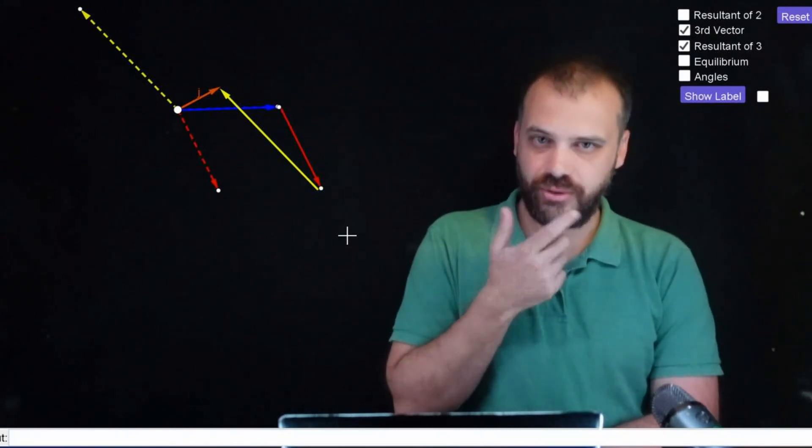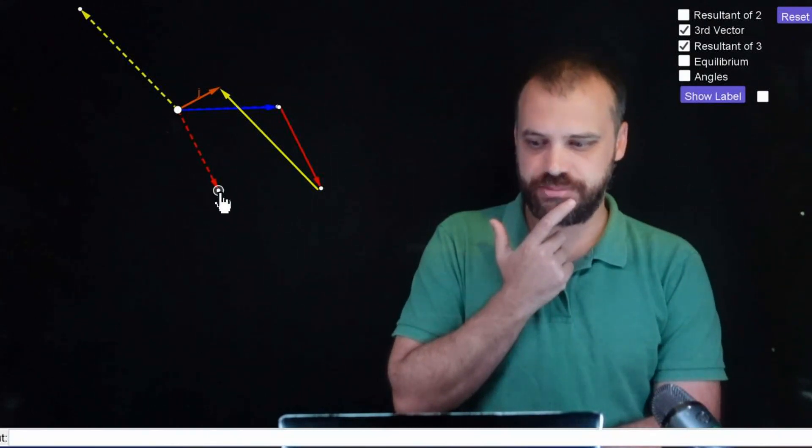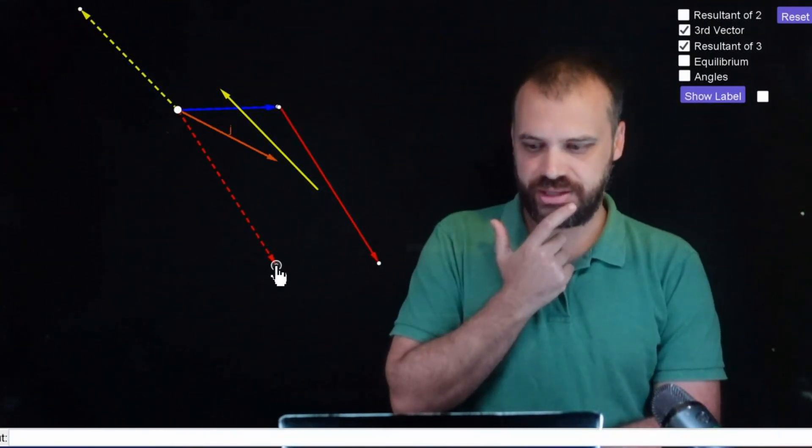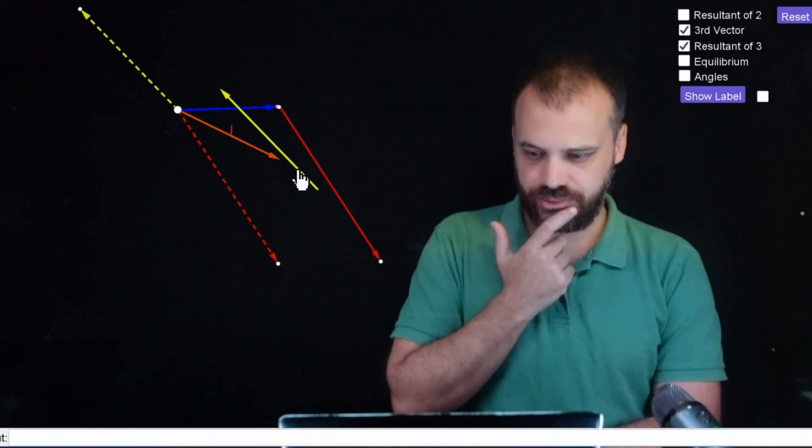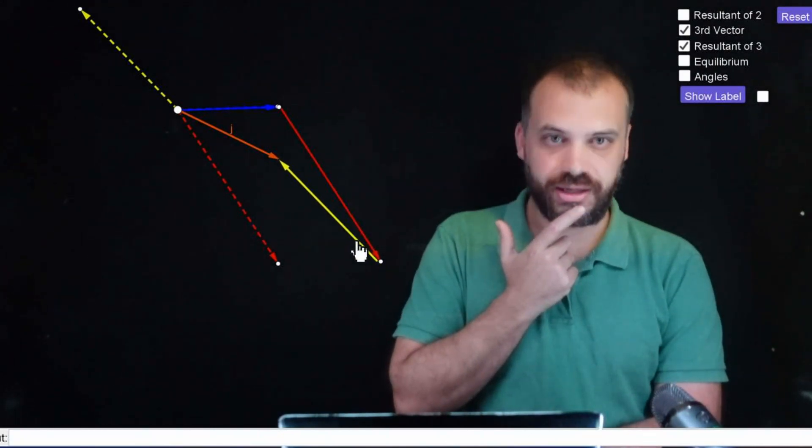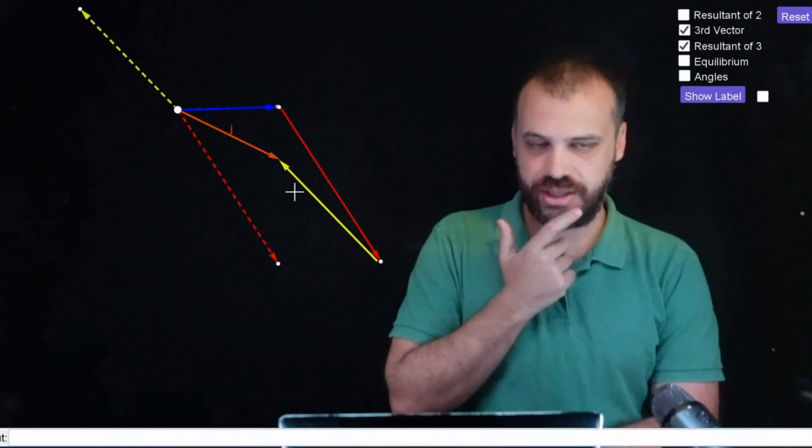And again, we could say the person in red is much, much stronger. And that's where the fridge is going to end up now, right? Blue plus red plus yellow.